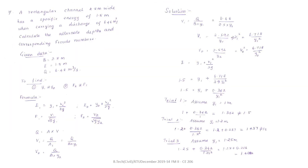The next problem: a rectangular channel 2.5 m wide has a specific energy of 1.5 m when carrying a discharge of 6.48 m³ per second. Calculate the alternate depths and the corresponding Froude numbers. Given: rectangular channel, b = 2.5 m, E = 1.5 m, Q = 6.48 m³/s.